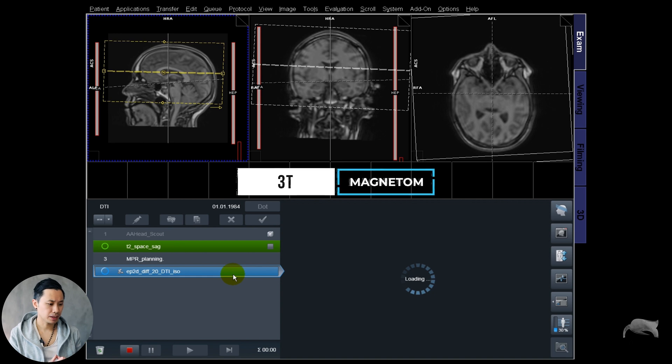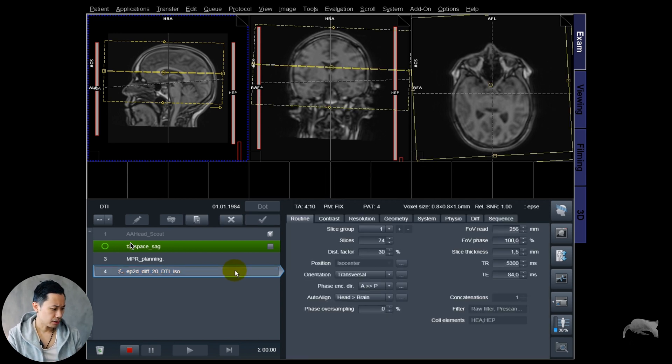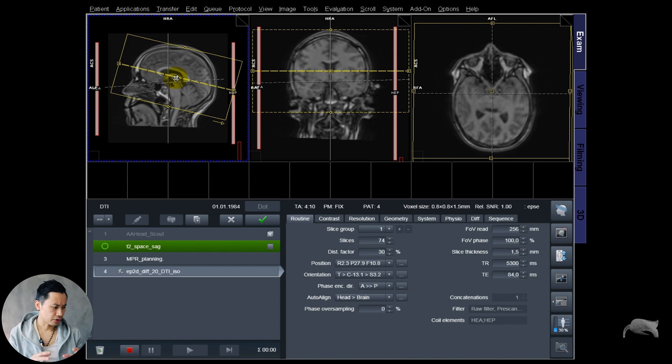We are currently at 3T but this works on 1.5 as well. I already ran a T2 SPACE 3D sequence here and I have a preparation for the brain. Now we have a DTI right there.